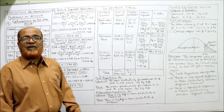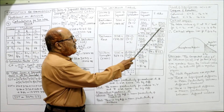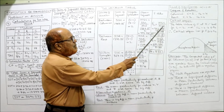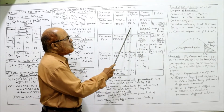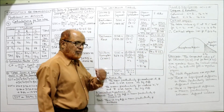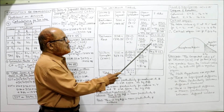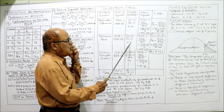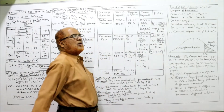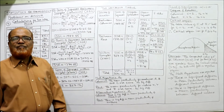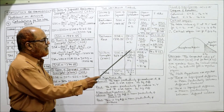Degrees of freedom for both columns and rows: numerator df V1 = 2, denominator df V2 = 4. Both the column F-test and the row F-test use the same degrees of freedom: V1 = 2 and V2 = 4.